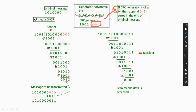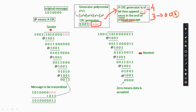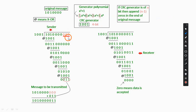If the CRC generator has n bits (here n = 4), we append n−1 zeros to the end of the original message. So we append three zeros to the original message.